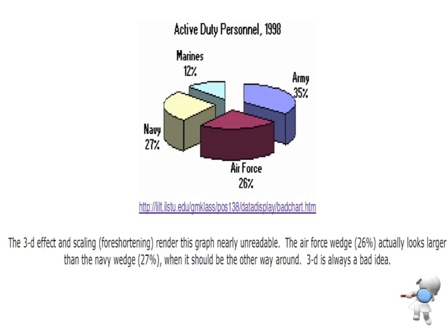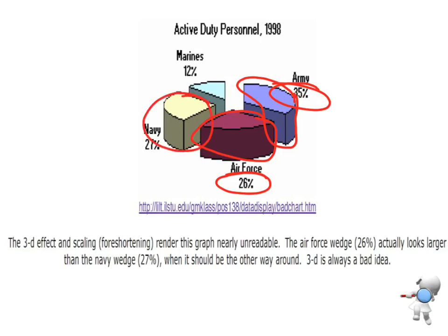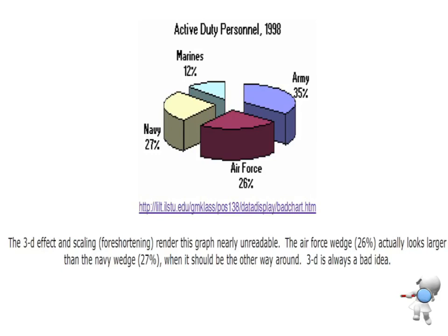Here's another example of a not-great graph. Three-dimensional pie charts are my pet hate. The reason I really don't like three-dimensional graphs — particularly three-dimensional pie graphs — is that our brain, when we see a graph, looks for area to make comparisons; it doesn't think about volume when drawn on paper. So at first glance it looks like the Air Force is the biggest group, but if we look at the numbers, the Air Force is 26% whereas the Army is 35%. These two pieces look similar, or even the Air Force one being slightly bigger, and the Navy is at 27%. The area our brain sees does not accurately represent three-dimensional graphs.